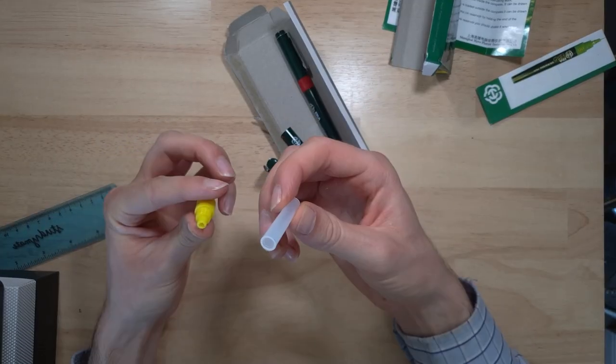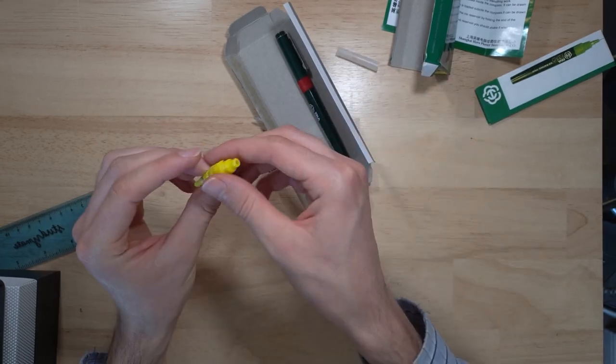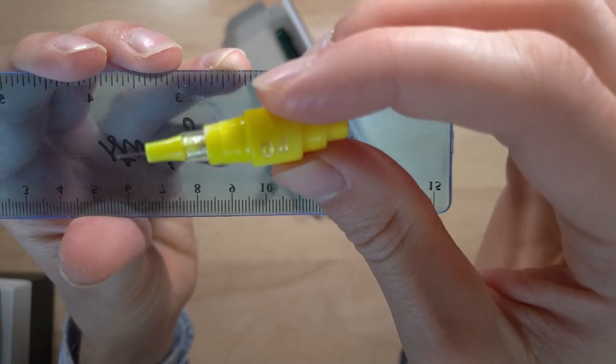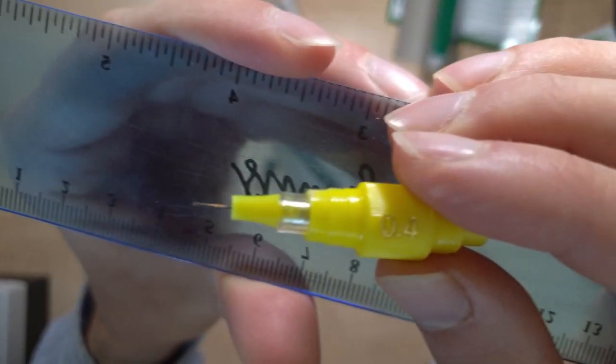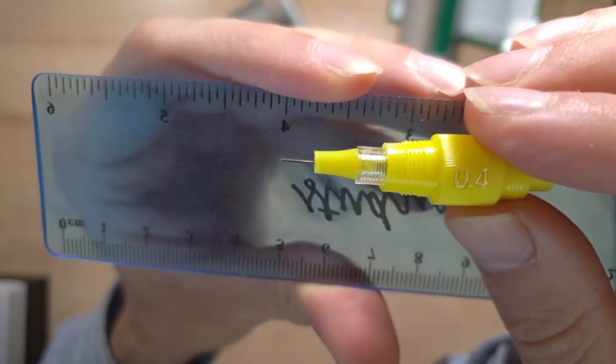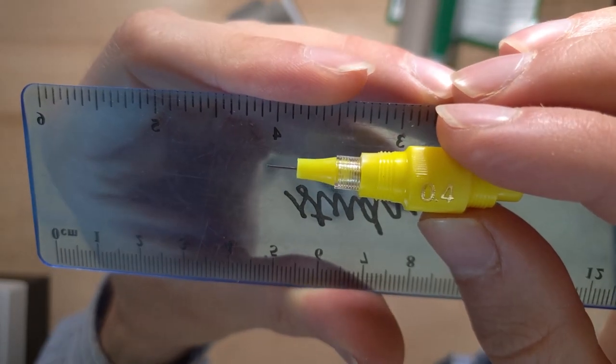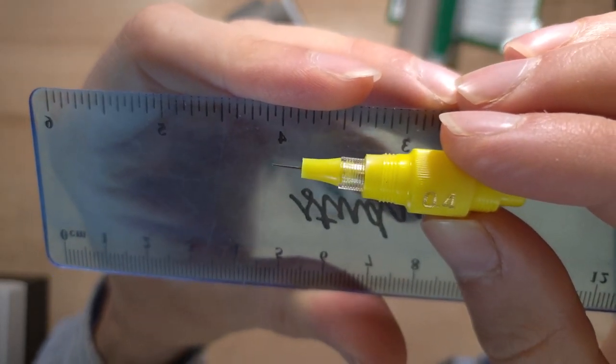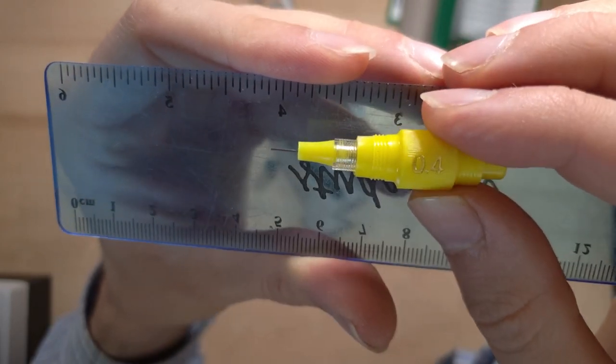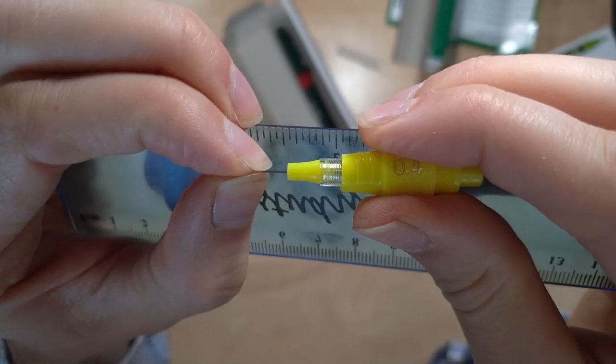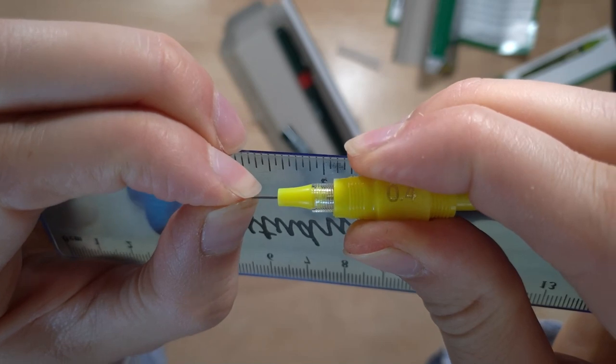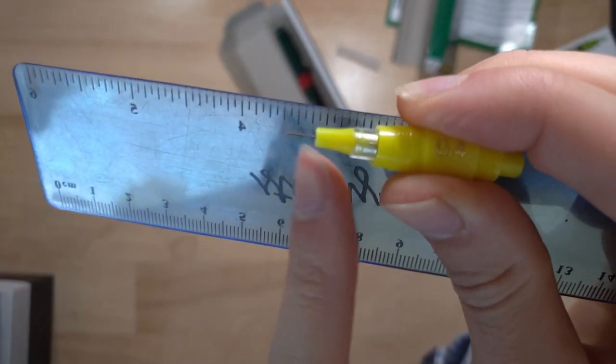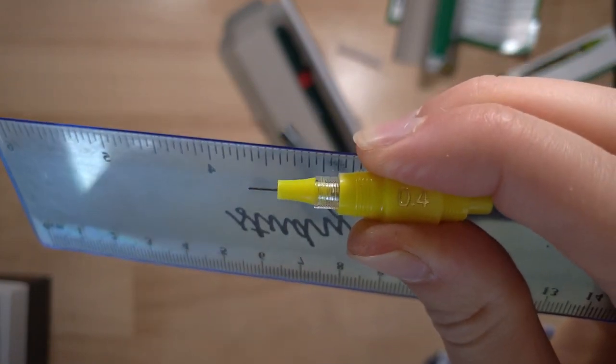Here's the refillable ink cartridge. This is the tip of the pen, the 0.4 millimeter one. I don't know if you can see that but the tip of the pen is not perfectly in line with the actual pen. It's slightly off to a strange angle. In fact if I grab the tip of the pen there's a slight amount of wobble there. That might just be because the tip of the pen is actually incredibly long.